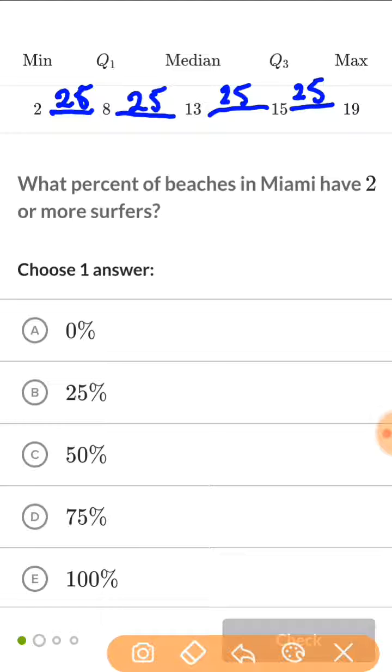So what that lets you know is that since you're looking for two or more surfers, two or more surfers would be right here, which is the minimum. So what percent is going to be 2 or more? Well, they're all two or more. Everything over here is two or more. So altogether, that's 25, 50, 75, 100% of your beaches have two or more surfers.